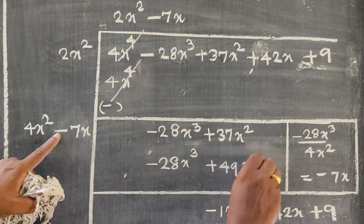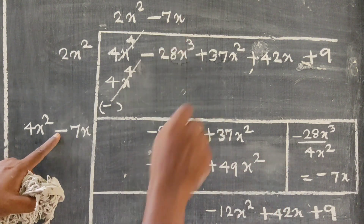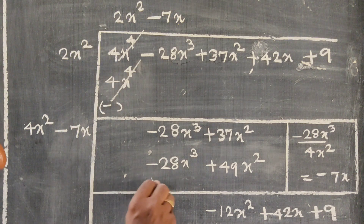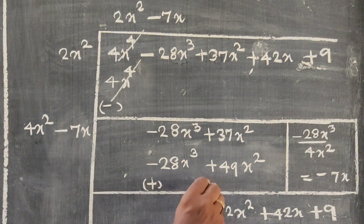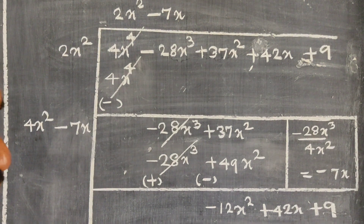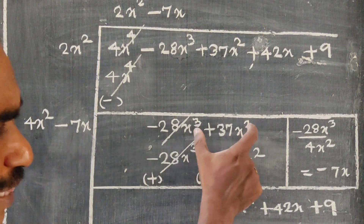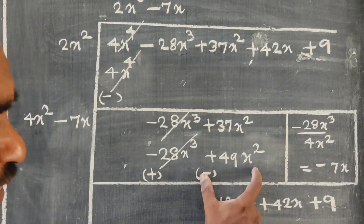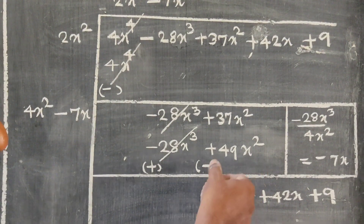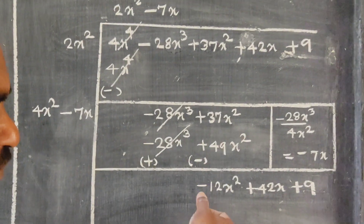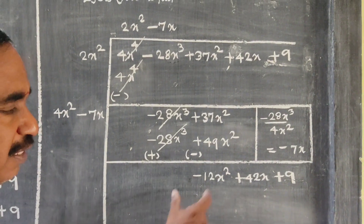7 into 7 is 49x². Now subtract with sign change and cancel. We have 37x² minus 49x² — subtracting gives the difference: minus 12x².